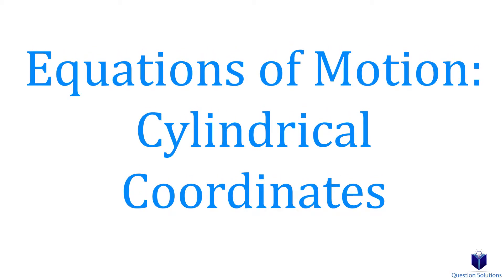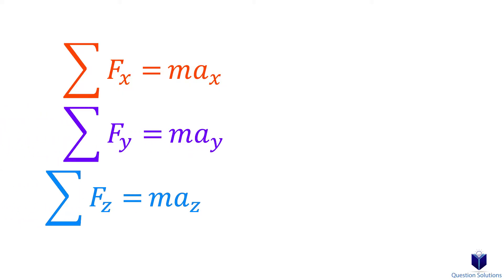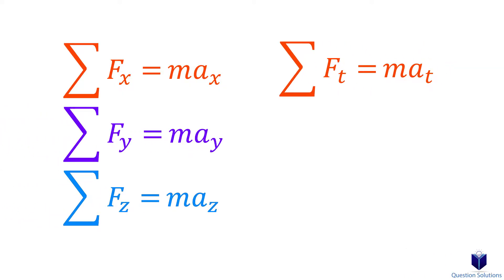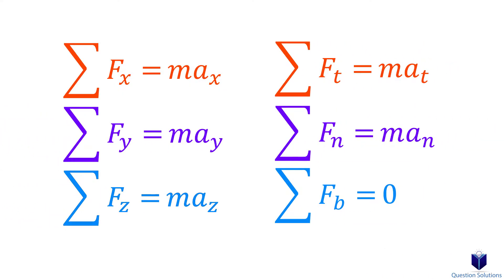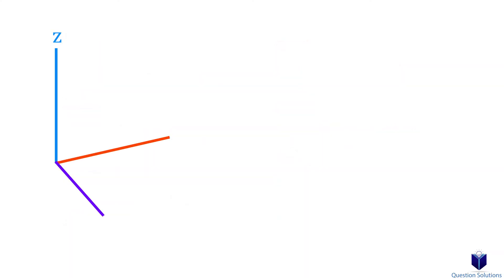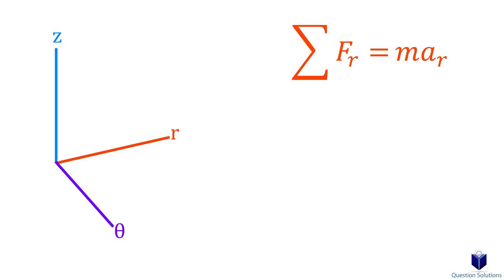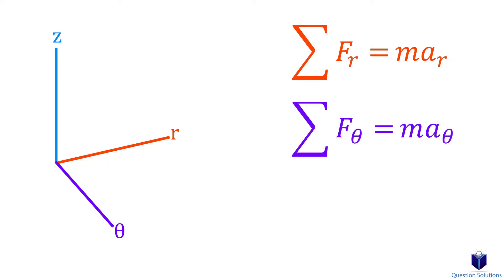In the previous chapters, you probably learned that we can write F equals ma with respect to rectangular coordinates and normal and tangential coordinates. In this chapter, we write F equals ma with respect to cylindrical coordinates. We can say forces in the radial axis equal mass times radial acceleration, forces in the transverse axis equal mass times transverse acceleration, and forces in the z axis equal mass times z acceleration.